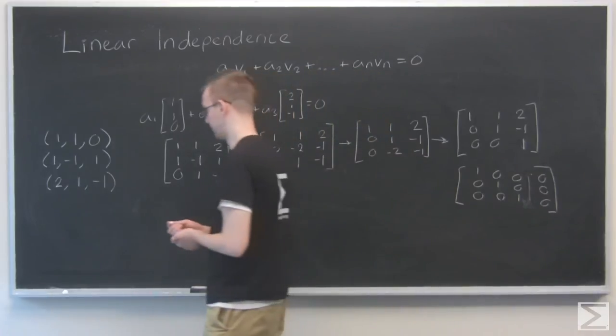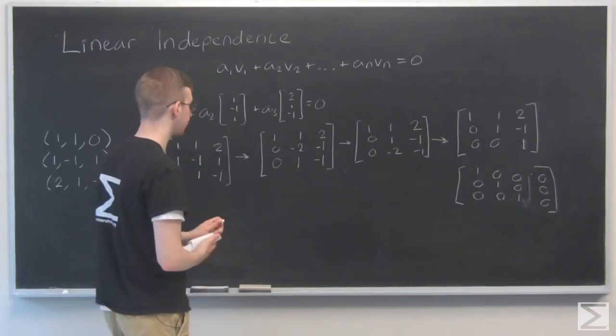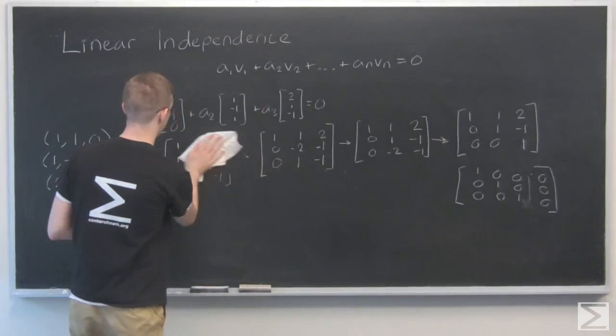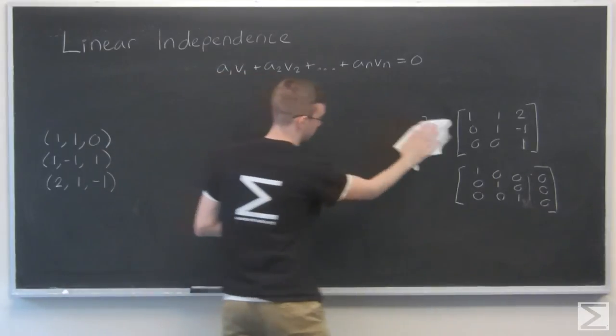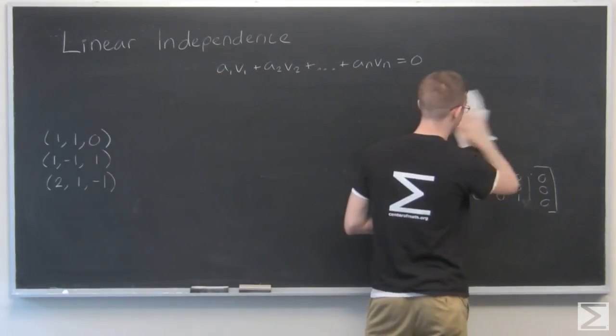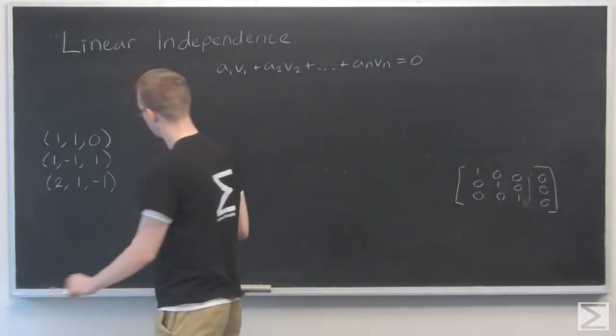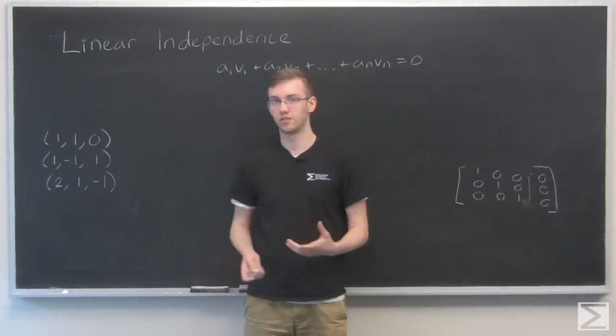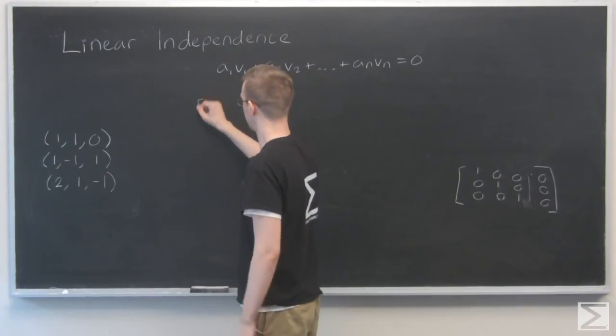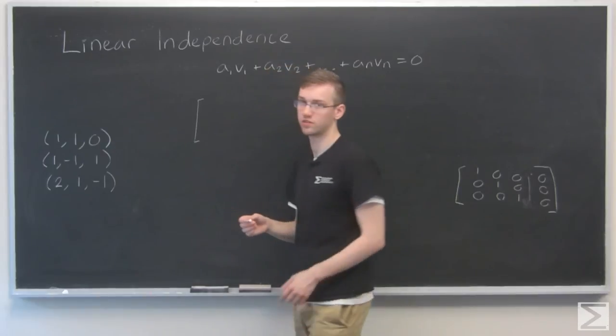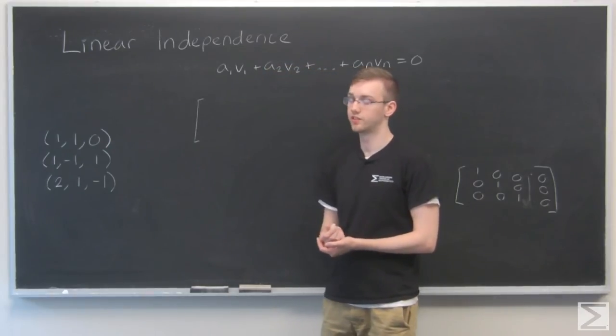Here's another way. We can also find this with determinants. And this only works because we have three vectors in R3, so that's going to be a square matrix, the coefficient matrix. And the trick is, if the determinant is not equal to 0, that means your vectors are linearly independent.